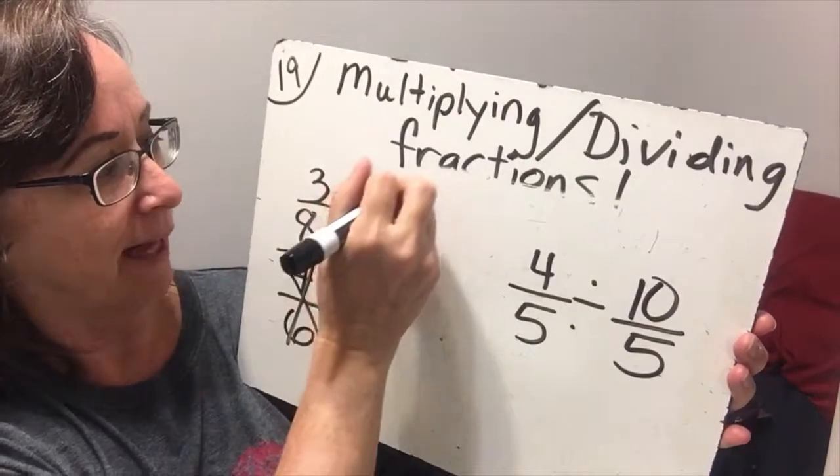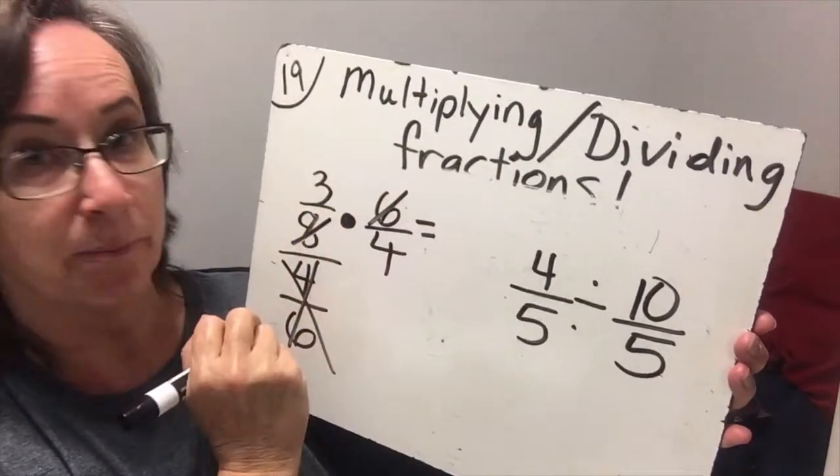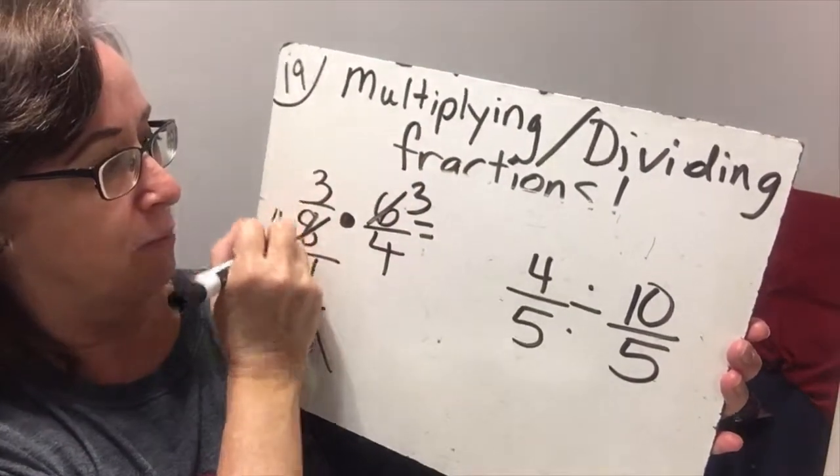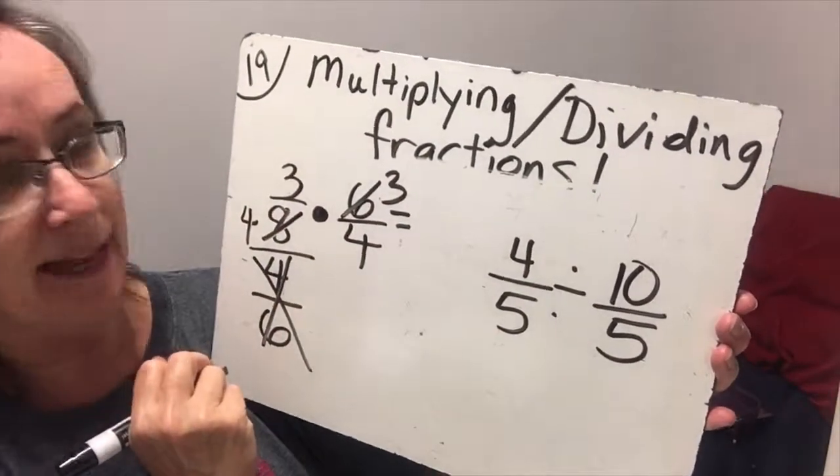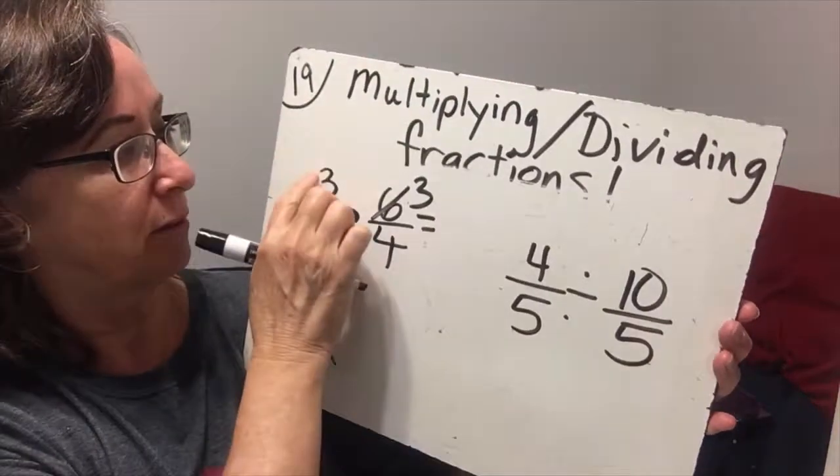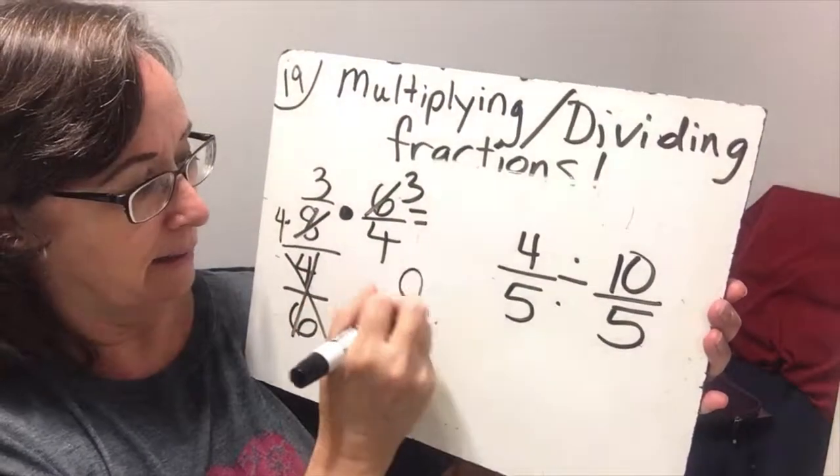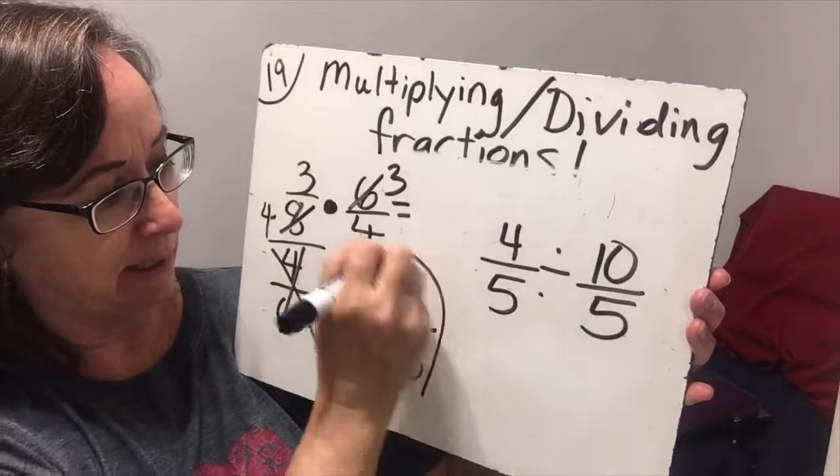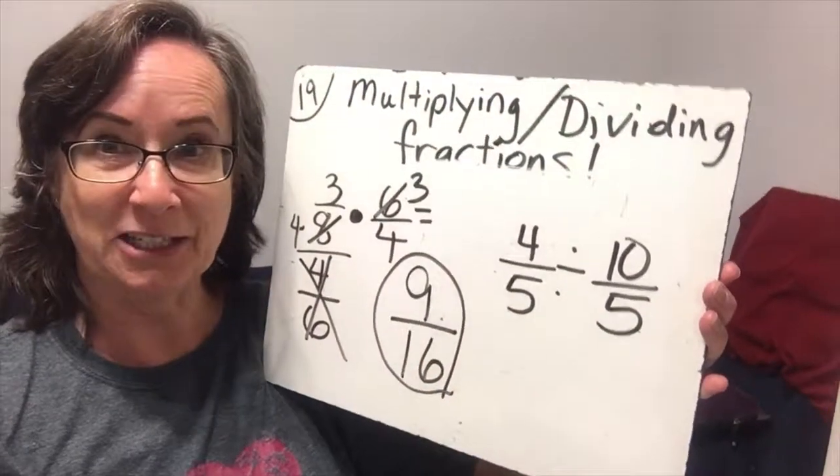Now, we have a 6 and an 8 that both have a 2. So we divide and get a 3 and a 4 and nothing else is going to cancel. So 3 times 3 is 9 and 4 times 4 is 16. So we get a 9 over 16. Did you do it?